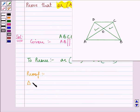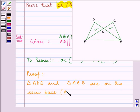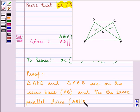We can see that triangle ADB and triangle ACB are on the same base, that is AB, and between the same parallel lines, that is AB is parallel to DC.